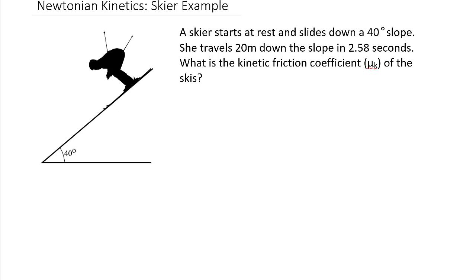And so we have this skier, and the skier has a mass of 100 kilograms, and she is going to slide down a 40 degree slope, and after she's traveling 20 meters down that slope, it will have elapsed 2.58 seconds. Now one thing that we need to accept about the skier is that when she comes out of the starting gate, she's not going to push with her poles, she is just going to tuck down over her skis and slide down the slope.